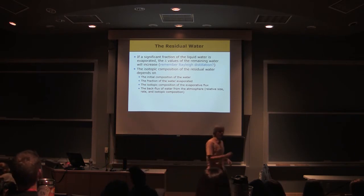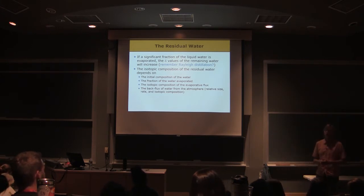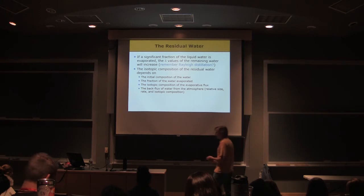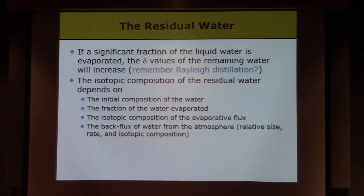So we can model this process using Raleigh distillation also. It's just the reverse of what we talked about before. Now we're removing something light instead of removing something heavy. We're looking at the evolution of the residual material as it comes along. The isotope composition of the residual water in the lake or the leaf is going to depend on a number of things: the initial isotopic composition, our starting point, the R sub zero in the Raleigh model. It's going to depend on the fraction of the water evaporated, or F term in the Raleigh model. And then it's going to depend on the alpha term.